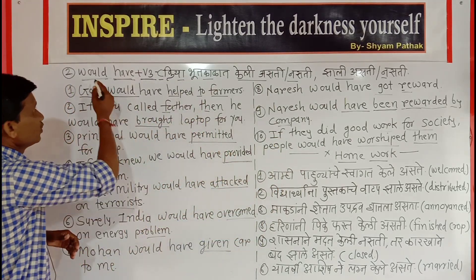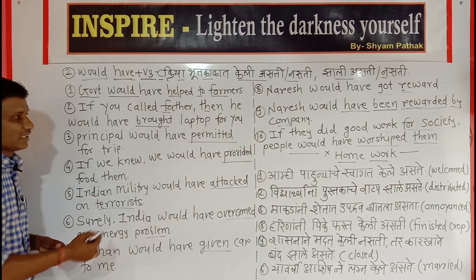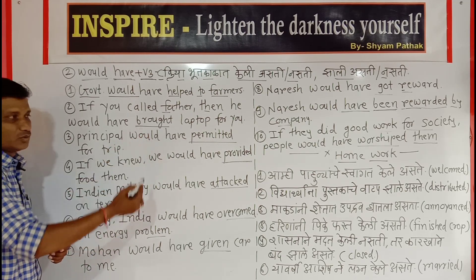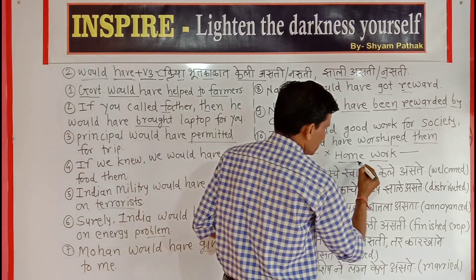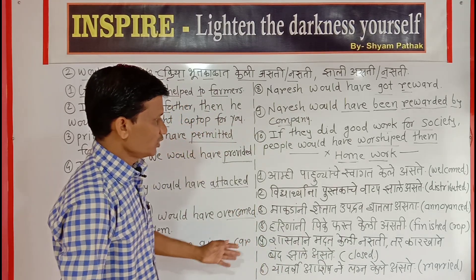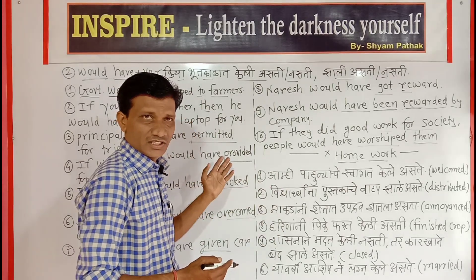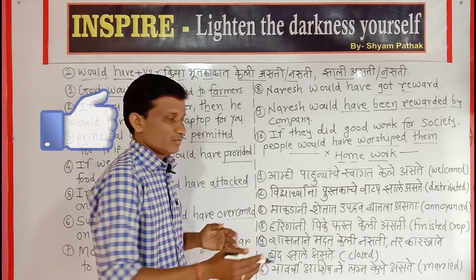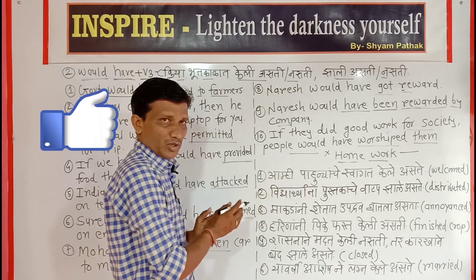We have seen the Would Have + V3 sentences. Now you have to write down all sentences and practice them. This is your homework — very interesting homework! You have to make or convert these sentences into English, both in negative form and simple form.